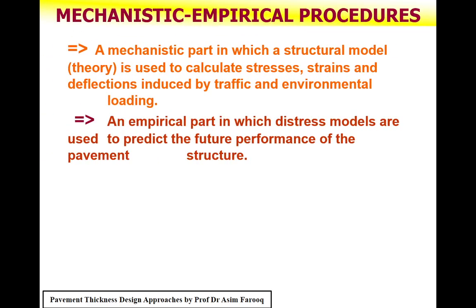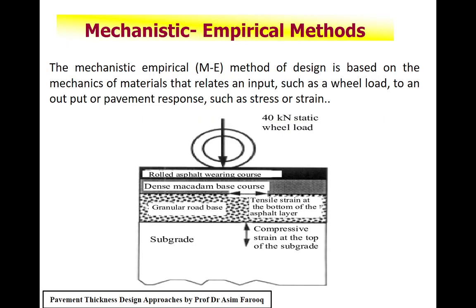The mechanistic empirical procedure has two parts. The first is the mechanistic part, in which a structural model theory is used to calculate stresses, strain, and deflection induced from traffic and environmental conditions. The second is the empirical part, in which stress models are used to predict the future performance of the pavement structure. These stress models are typically developed from laboratory data and then calibrated with field data, making it a combination of both mechanistic and empirical procedures.